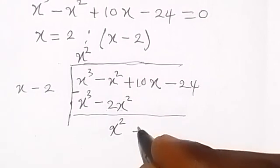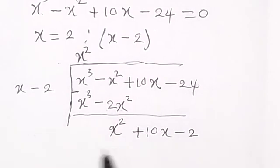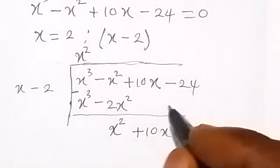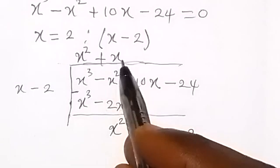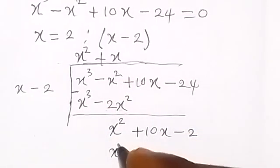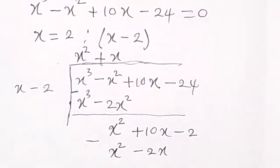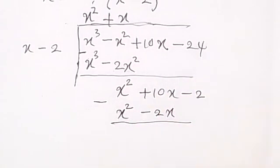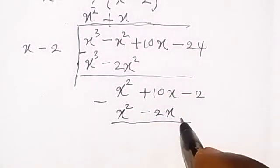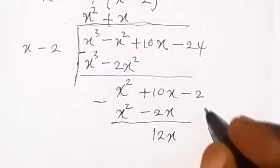We bring 10x down to get plus 10x minus 24. Then x goes into x squared giving plus x. We multiply: x times x gives x squared, and x times minus 2 gives minus 2x. When we subtract again, 10x minus minus 2x gives 12x, then we bring minus 24 down.